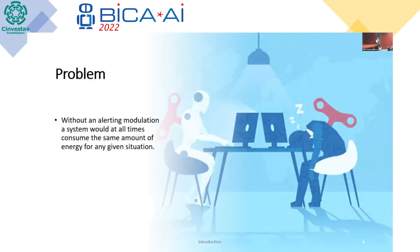In this work, we work with alerting. But what exactly is the problem? Without alerting modulation, a system will, at all times, consume the same amount of energy for any given situation. That means it doesn't matter if the cognitive architecture performs a complex task with many stimuli or a specific task in a controlled environment — the system uses the same amount of energy in almost all cases.